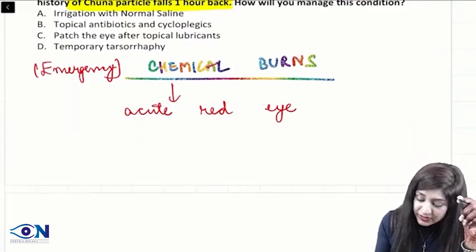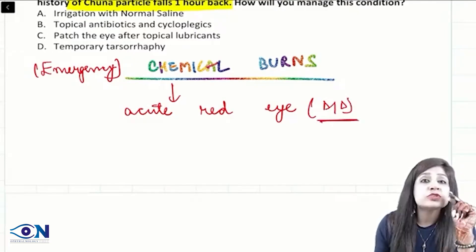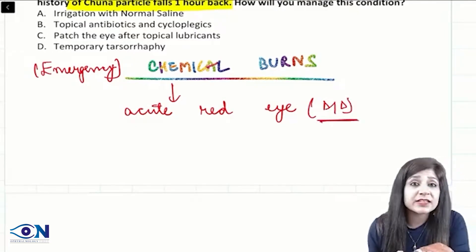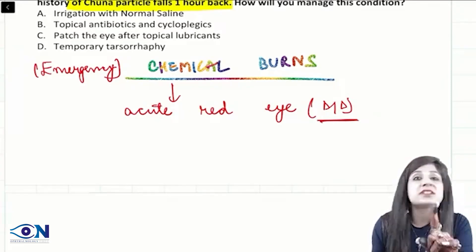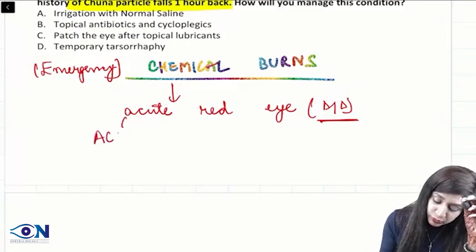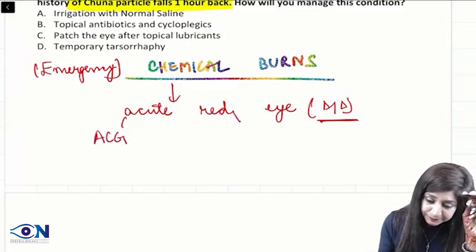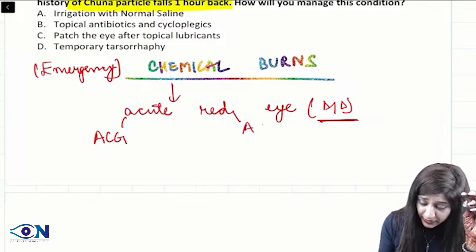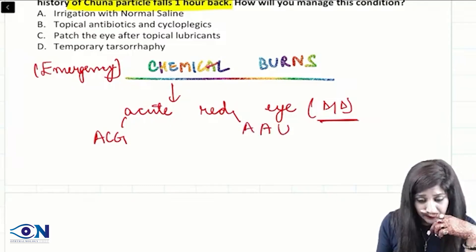Whenever you have this acute red eye, we have a differential diagnosis. The most common DD, though we are discussing chemical burns, yet chemical burns is not the most common DD of acute red eye. Either it is acute congestive glaucoma or acute anterior uveitis.